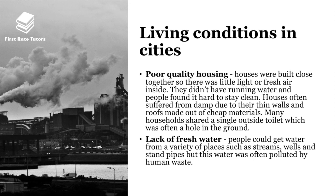Housing for low-class workers was of very poor quality. Houses were built close together with little light or fresh air, and had no running water, making it hard to stay clean and hygienic. Houses suffered from damp due to thin walls and cheap roofs, and many households shared a single outside toilet — often just a hole in the ground. People could get water from streams, wells and standpipes, but this water was often polluted by the same human waste flowing through sewers and into rivers.